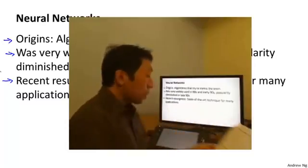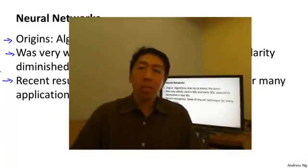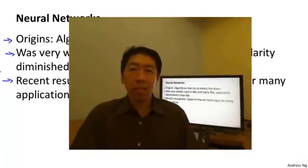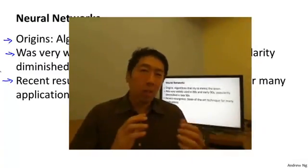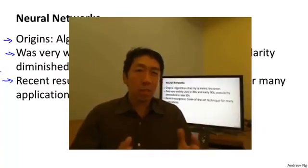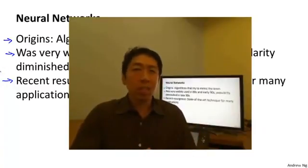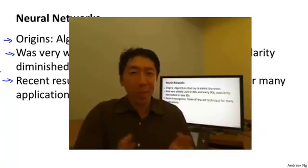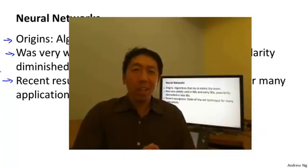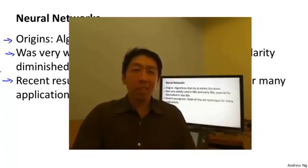When you think about mimicking the brain, the human brain does so many amazing things. The brain can learn to see, process images, learn to hear, learn to process a sense of touch, learn to do math, learn to do calculus. The brain does so many different amazing things.